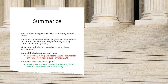Most states will also tax capital gains as ordinary income — that's bad. Some of the highest maximum state rates include California at 13.3%, Oregon at nearly 10%, Minnesota at nearly 10%, and New Jersey over 10%. On the other hand, states like Alaska, Florida, Nevada, South Dakota, Texas, and Wyoming don't tax capital gains at all.